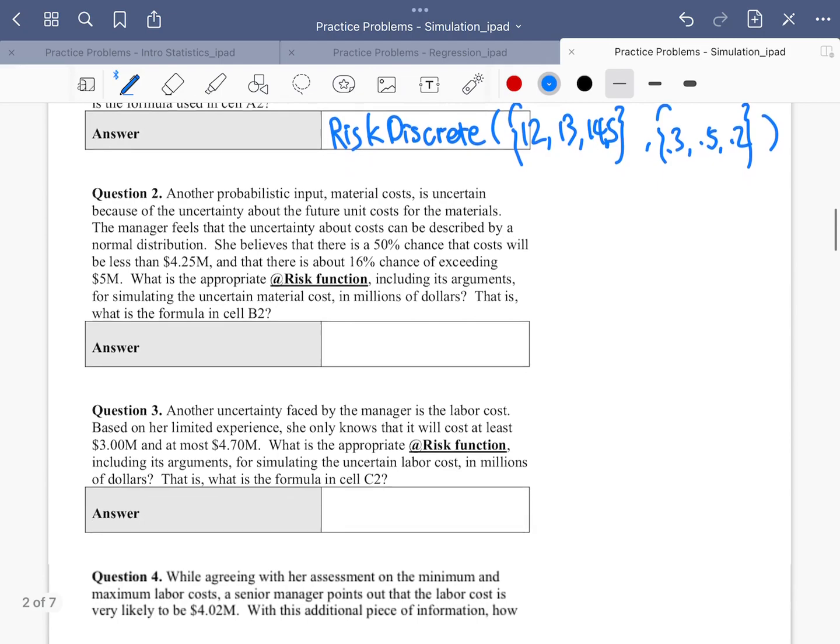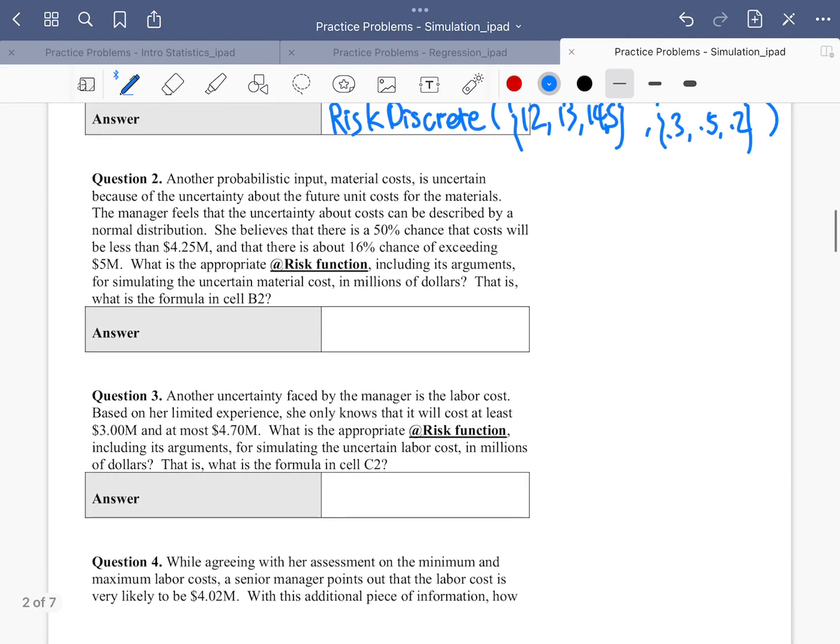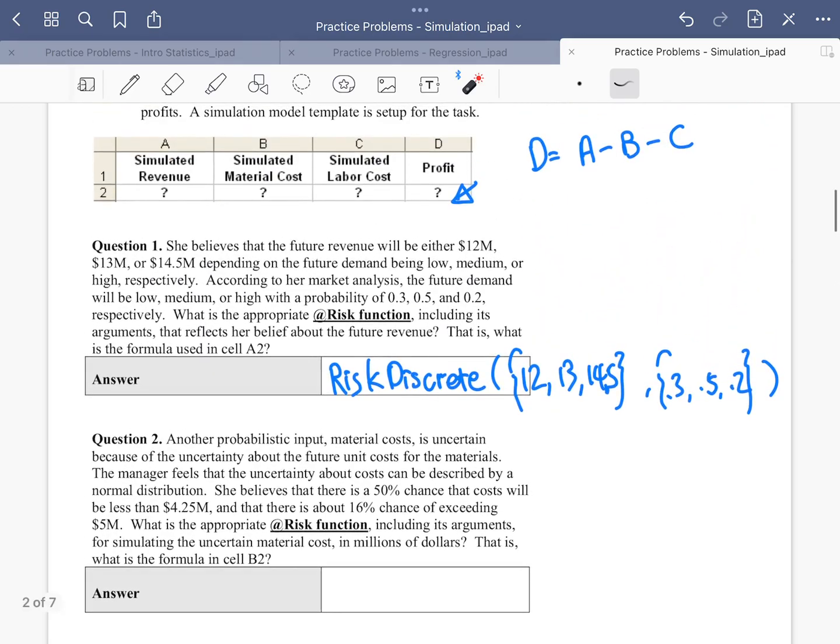So another probabilistic input is for material cost. Material cost, you probably remember it is here. As uncertain because of the future unit cost for materials. And so this manager feels that the uncertainty about the cost can be described using a normal distribution, right? That means it can be described using a bell curve. She believes that there's a 50% chance that the material cost will be less than 4.25.